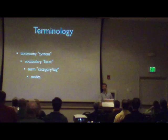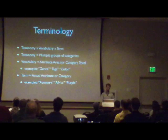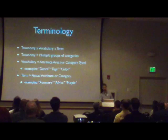Here's just another way of saying all of that again. Taxonomy contains vocabularies, which contain terms. Taxonomy refers to multiple groups of categories. The vocabulary is an attribute area — for example, it could be genre, tags, or color. The term could be 'romance' if it's genre, 'Africa' if it's tags, or 'purple' if it's color.